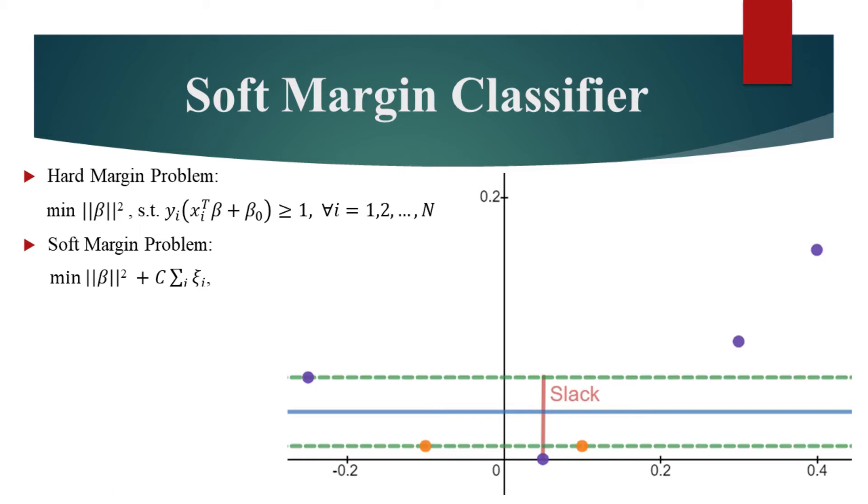c is a hyperparameter which controls the tolerance for the errors. Smaller the value of c, less important it becomes to minimize the errors. And higher the value of c, more important it becomes to minimize the errors.